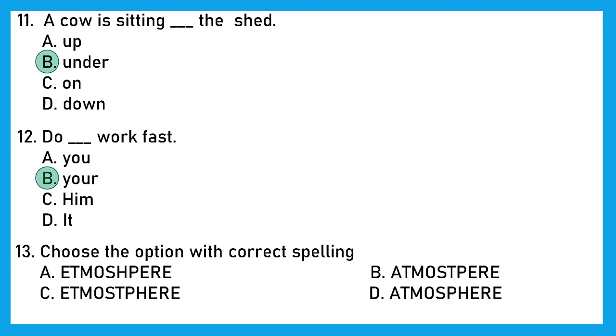Question 13. Choose the option with correct spelling. Now here, it looks like they are talking about atmosphere, the layer of gases around us. And the right spelling is A-T-M-O-S-P-H-E-R-E. Option D is the right answer.